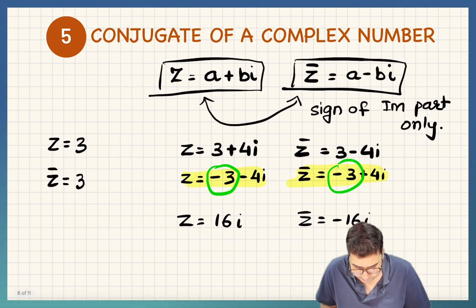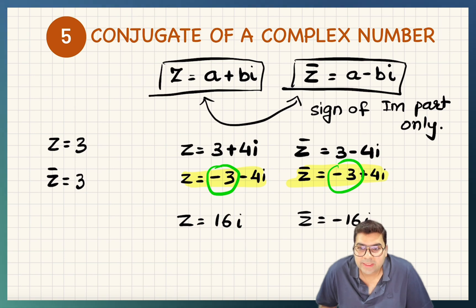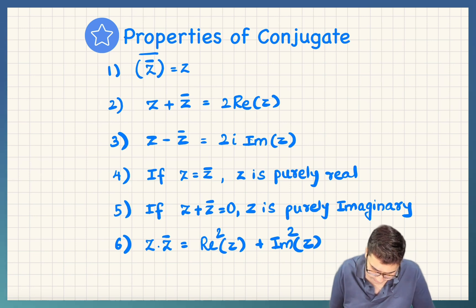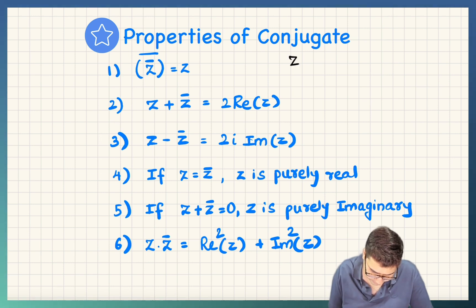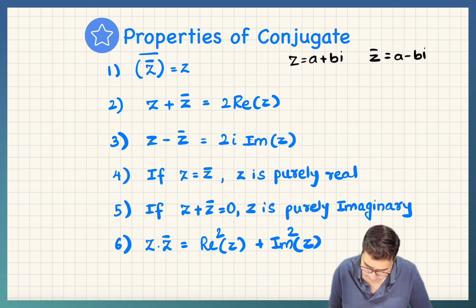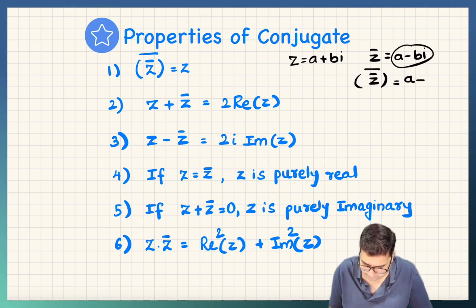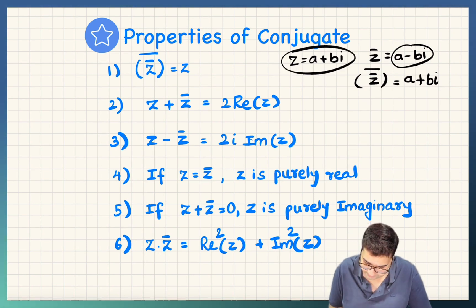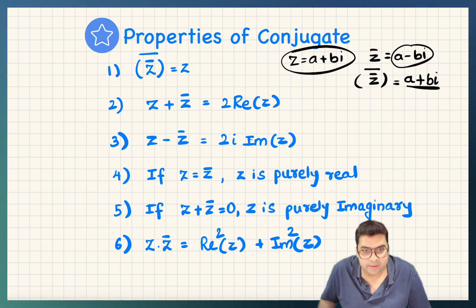One more time — if z is a plus bi, then its conjugate is a minus bi; you change the sign of imaginary part only. Now, certain properties are applicable. If z equals a plus bi, then z-bar is a minus bi. If you take its conjugate again, the conjugate of (a minus bi) ends up being a plus bi, because you change the sign of the imaginary part only — which is the original complex number z. And that is why z-bar-bar equals z.